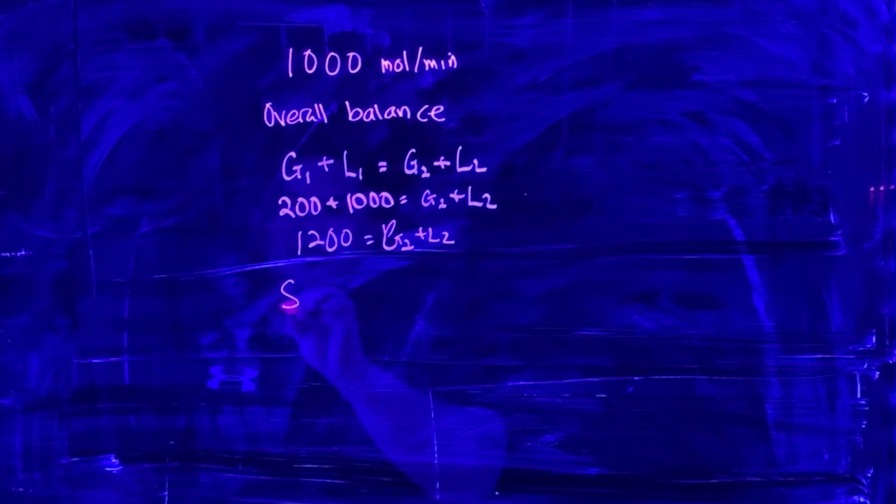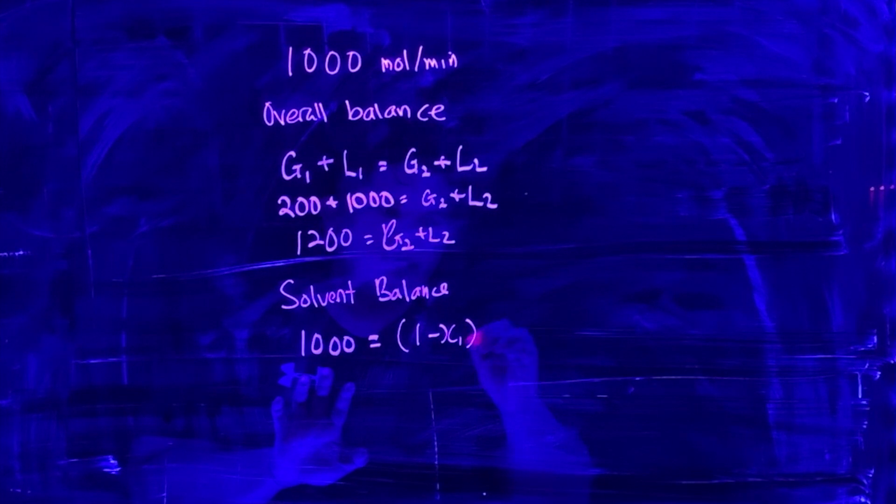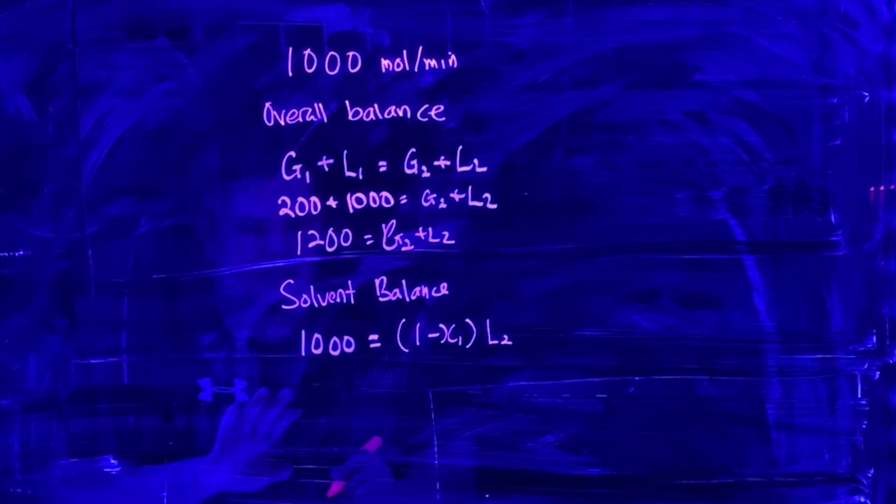The second equation is the solvent balance, where we have 1000 = (1 - x1)L2. This is the solvent balance.